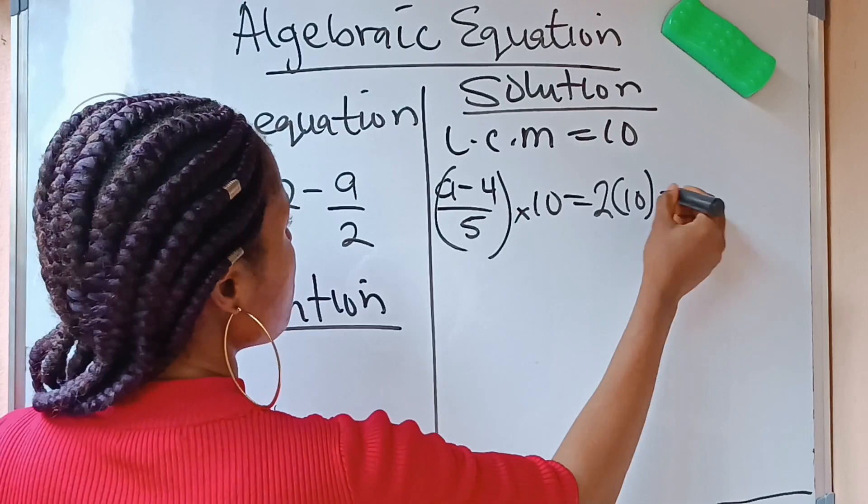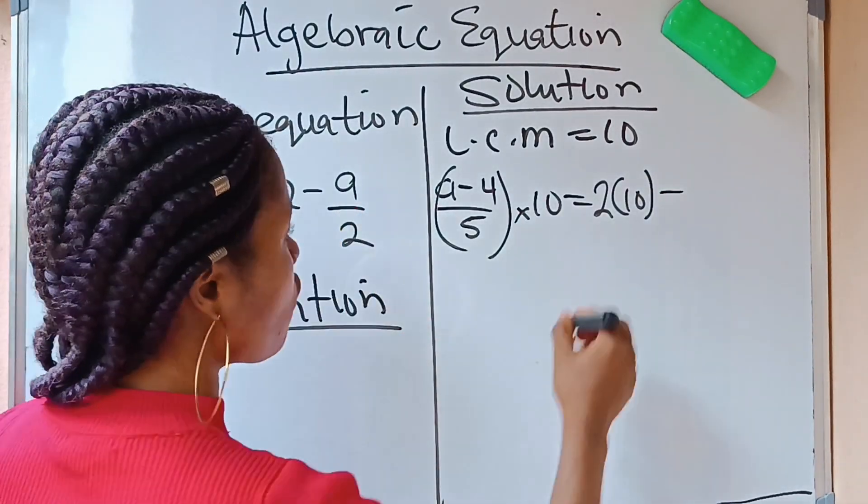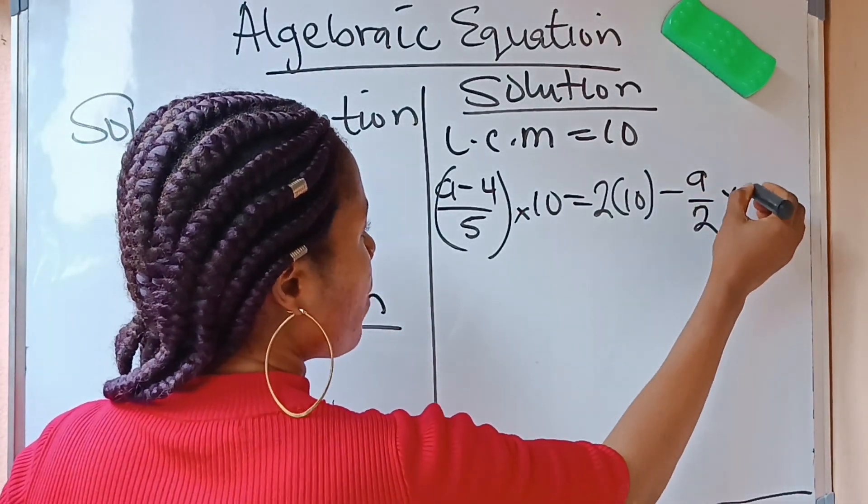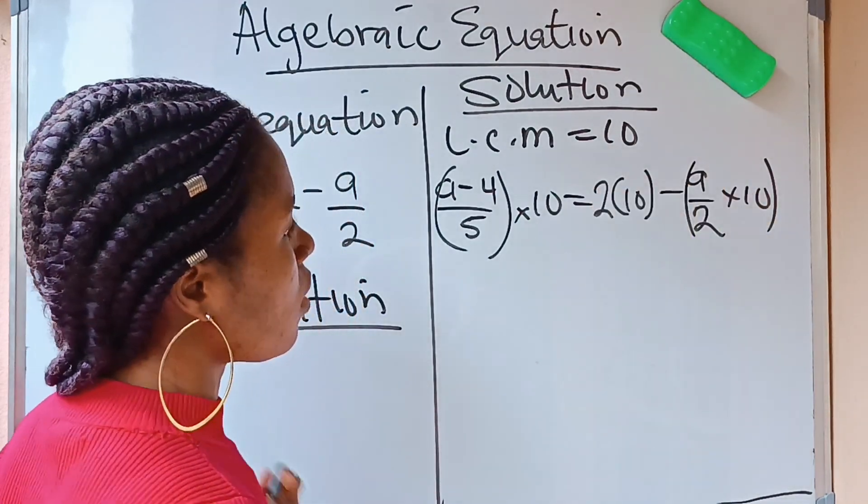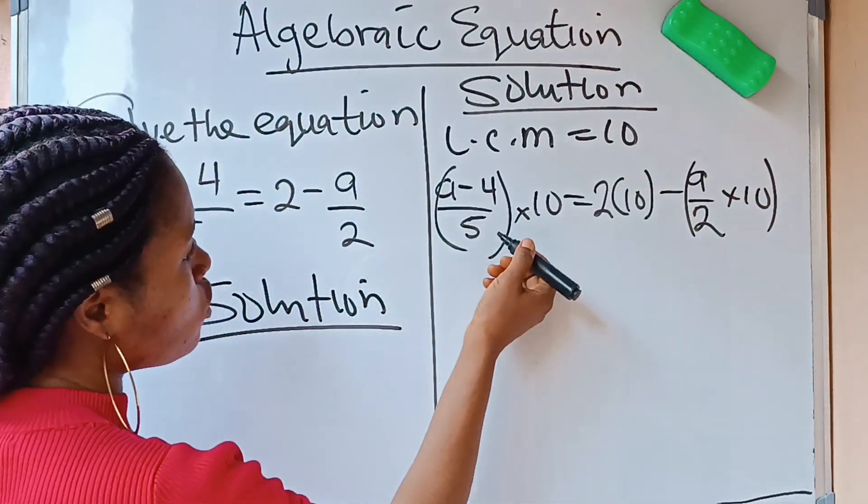Minus. You have A over 2. Multiply that A over 2 by 10 again. Now, having done that, we are going to solve this.